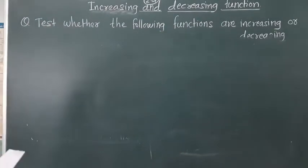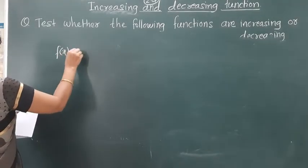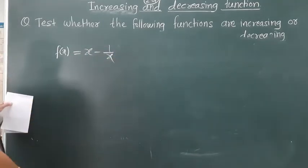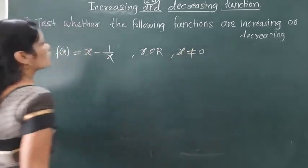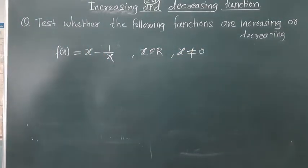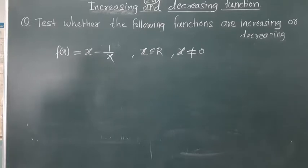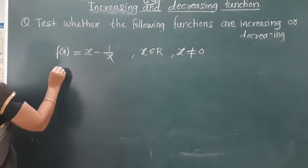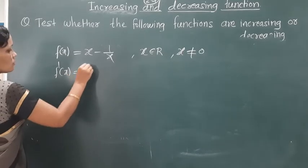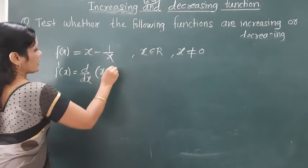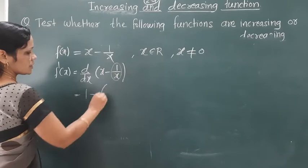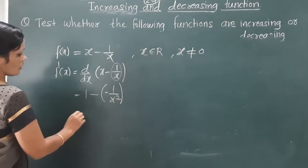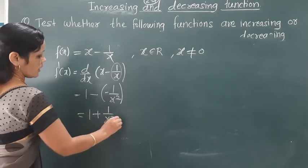Third example: f(x) = x - 1/x, where x belongs to R and x is not equal to 0. We differentiate: f'(x) = d/dx(x - 1/x). The derivative of x is 1, and the derivative of 1/x is -1/x², so f'(x) = 1 + 1/x².